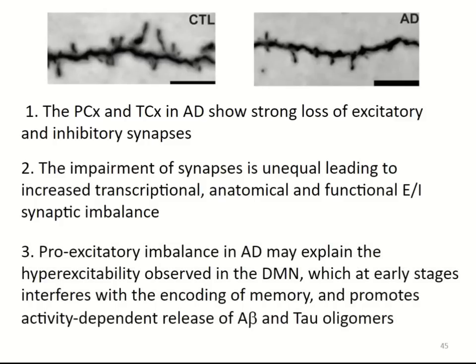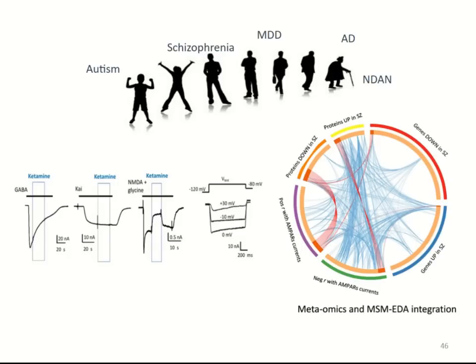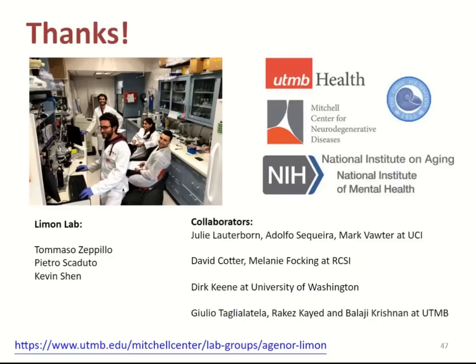Pro-excitatory imbalance in Alzheimer's disease may explain the hyperexcitability of the default mode network, which at early stages interferes with memory encoding and promotes activity-dependent release of A-beta and tau oligomers. There are many brain banks in the United States with tissue stored for many disorders — a large field of study remains. I'll stop here and thank the National Institute of Mental Health and Aging for support, the GRASS Foundation, and team members Tommaso, Pietro Scaduto, Kevin Shen, Julie Lautenborn, Mark Barron at UCI, David Carter and Melanie Faulkner at Royal College of Surgeons, and my collaborators at UTMB. Thank you very much — I'm open for your questions.